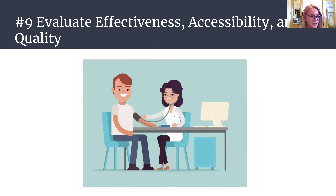The ninth essential service is to evaluate the effectiveness, accessibility, and quality of individual and community-based health services. Regarding access to affordable health care, we know steps can be taken to keep rates of the uninsured at a steady decline, as well as promote ways for access to become more practical. Communities can work to personalize health care coverage by evaluating social determinants, and further follow up with these recommendations by applying them to a local population and evaluating their success.